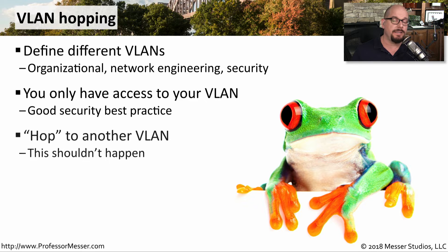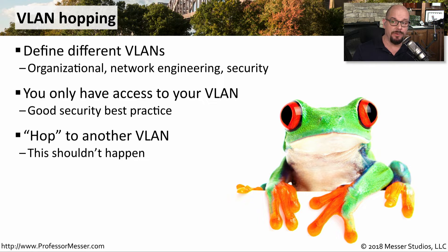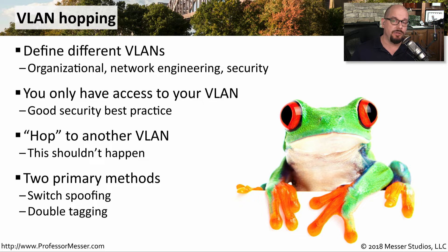There are some techniques that might allow someone to hop to another VLAN. This is something that should not be happening, and we want to be sure we're protecting against somebody who's able to access a VLAN that's not their own. There are two primary methods for hopping between VLANs: switch spoofing and double tagging.